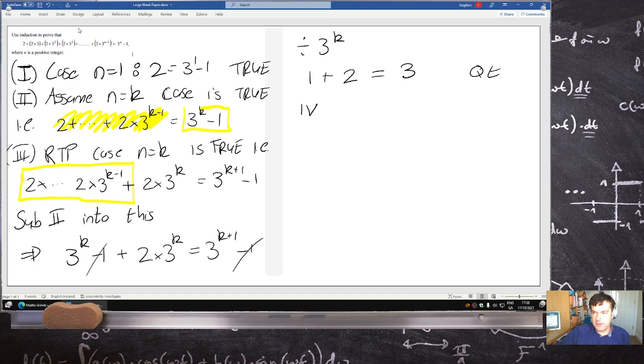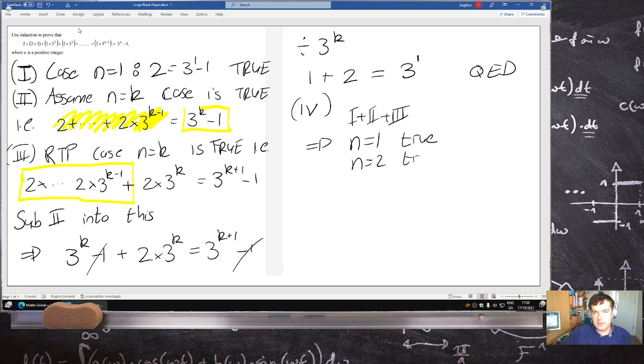And that's the proof. Then 1, 2, and then that just becomes 3 to the 1. I'll put a 1 there to make it clearer. Divided by 3 to the k from everything, so 1 plus 2 equals 3, which implies n equals 1 is true, n equals 2 is true, n equals 3 is true, etc.